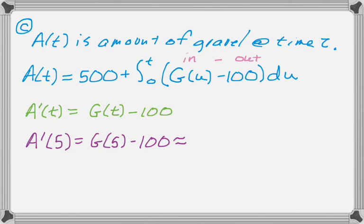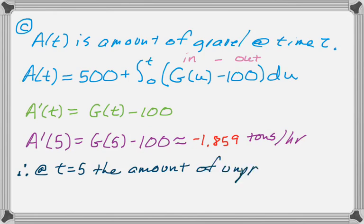And I'm going to grab my calculator and do G of 5 minus 100 is negative 1.859, and that's in tons per hour. And since that's negative, at T equals 5, the amount of unprocessed gravel is decreasing.